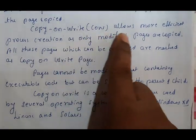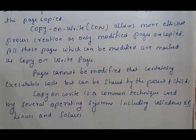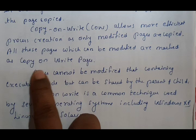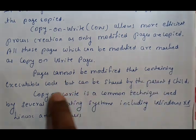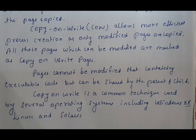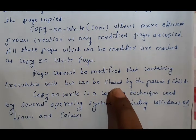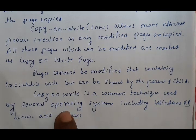So Copy-on-Write allows more efficient process creation — only the page you want to modify is copied. All modified pages are marked as Copy-on-Write pages. Pages containing executable code cannot be modified but can be shared by both parent and child. Copy-on-Write is a common technique used by several operating systems.